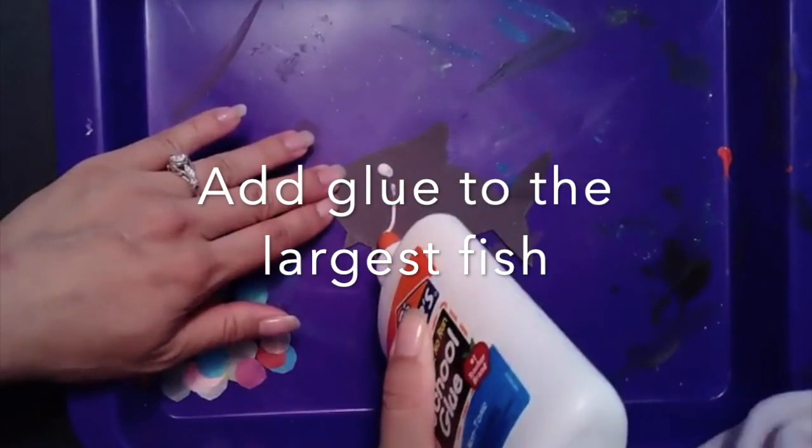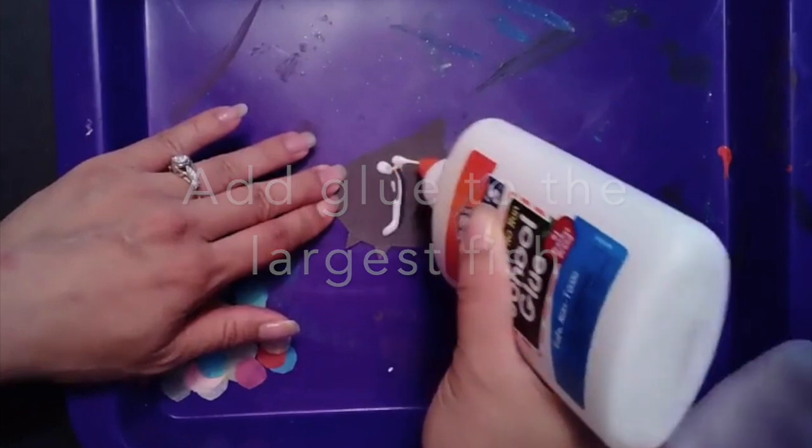Now that you're done with all the prep it's time for your child to participate. You can add glue to the fish so that they can put the scales on.